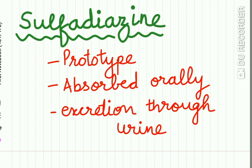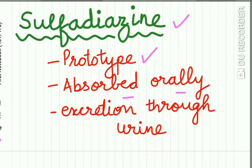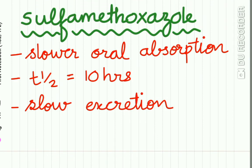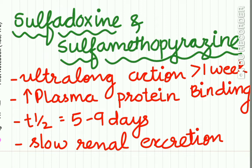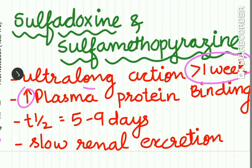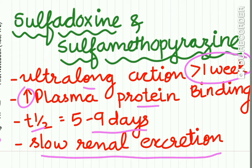Sulfadiazine is the prototype sulfonamide — it is absorbed orally and excreted in the urine. Sulfamethoxazole has slower oral absorption, a half-life of around 10 hours, and is slowly excreted. Sulfadoxine and sulfamethoxypyrazine are ultra-long acting with duration of action of more than one week. They show more plasma protein binding, a half-life of five to nine days, and slow renal excretion.